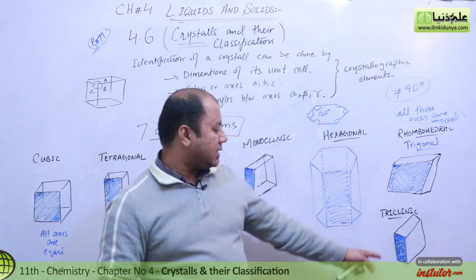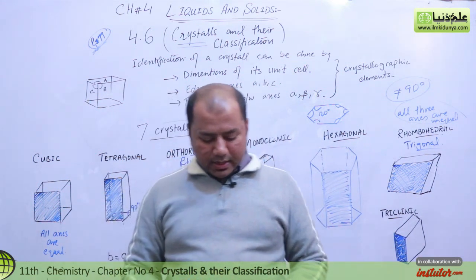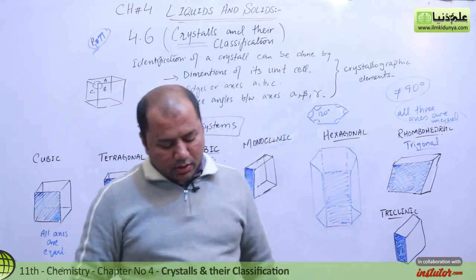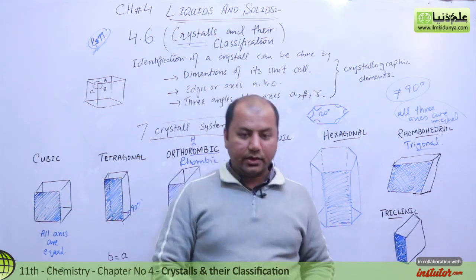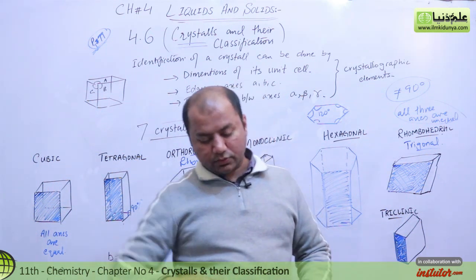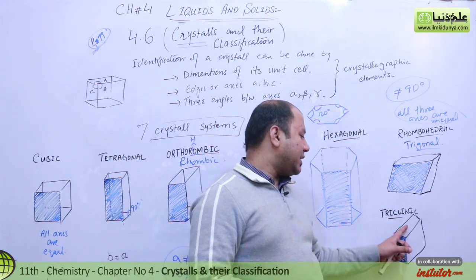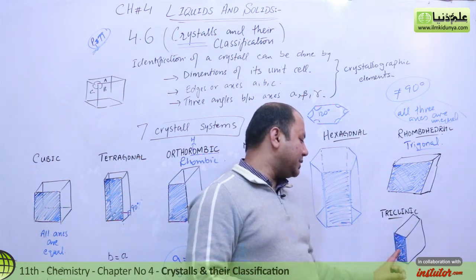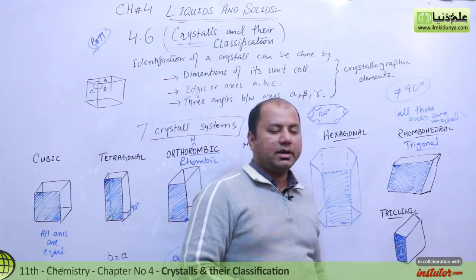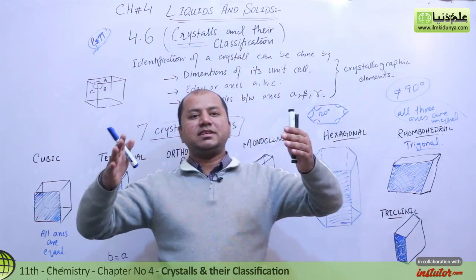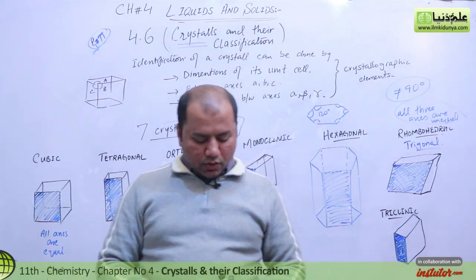And finally the last system: triclinic. In the triclinic system, all axes and all three angles are unequal, and none of the angles is 90 degrees. No three sides match each other — this side doesn't match the upper side, and there is no angle of 90 degrees at all.